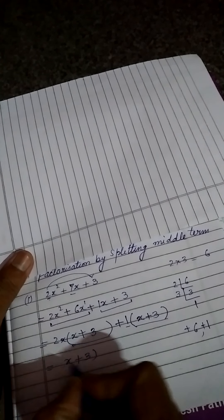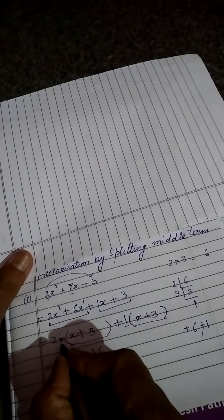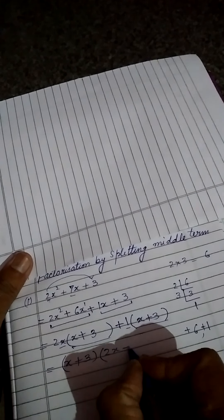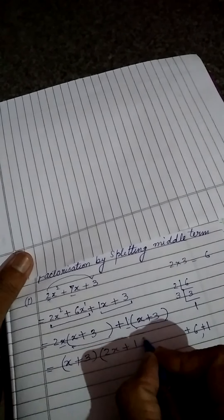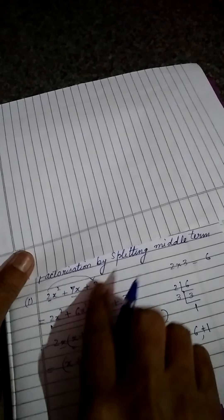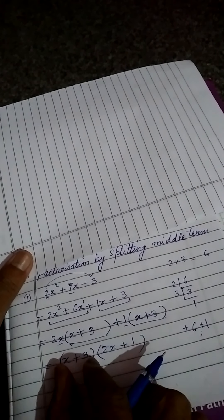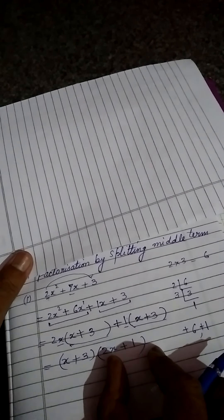x plus 3. And in second one, this one. 2x, then this sign, and this number. So these are the two factors. Because here the degree of this polynomial, greatest power is 2, so its factors will be 2. One factor is x plus 3. Second factor is 2x plus 1. So this is the first type of questions, which are based on splitting middle term factorization.